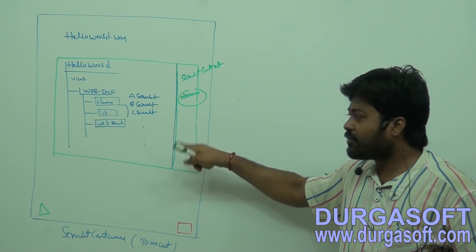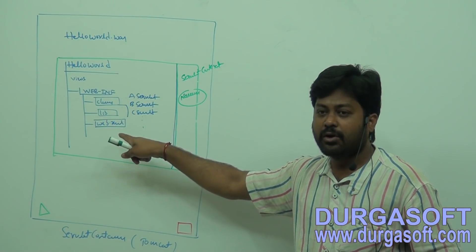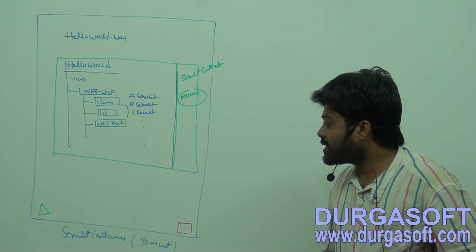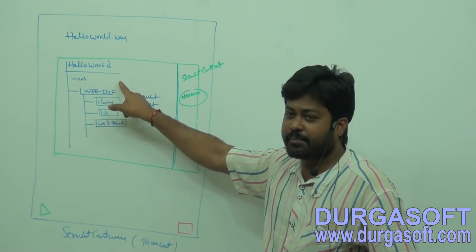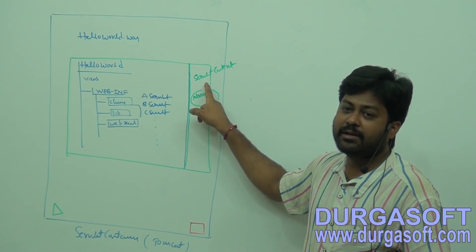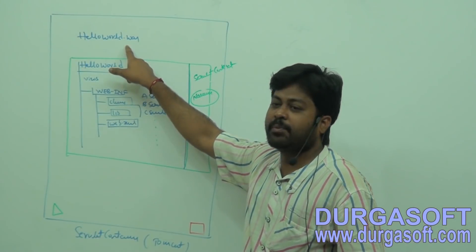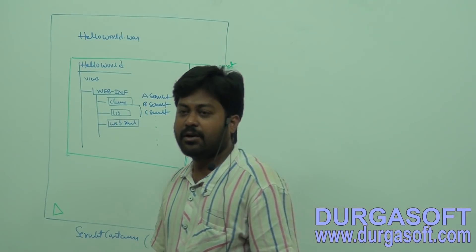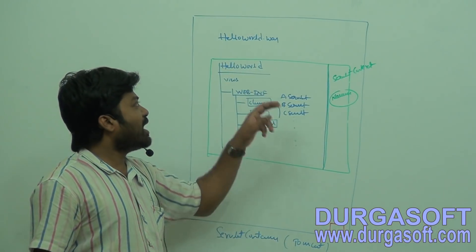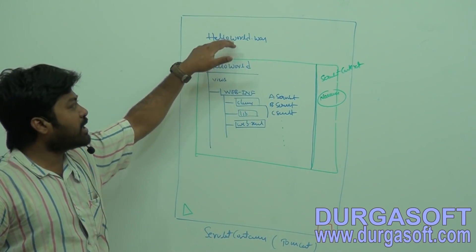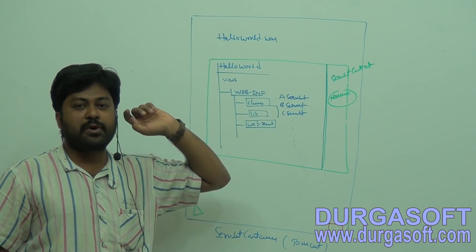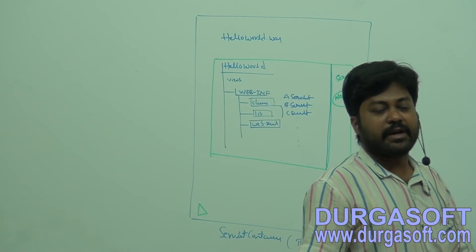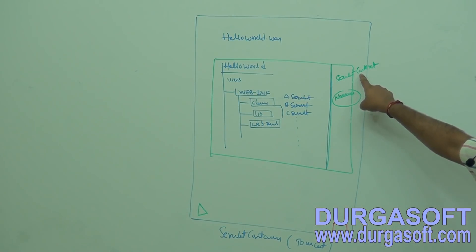Who will create this ServletContext object? Are we writing any ServletContext here? No — your servlet container will create that object. When you start an application, for each application it will create one ServletContext object. If I have multiple applications — HelloWorld.war, some Registration application, some DurgaSoft Student Management System.war — if I have three applications, how many ServletContext objects will it create? For each application, one ServletContext object.